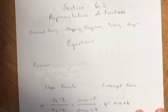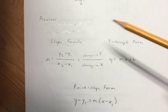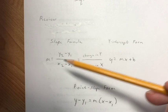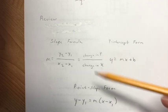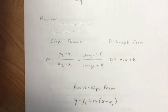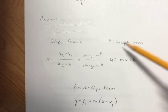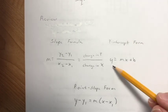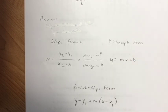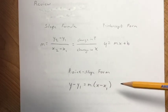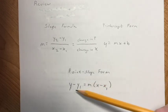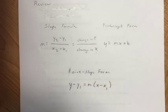So just to kind of review, we are still going to be working with the slope formula: m equals y₂ minus y₁ over x₂ minus x₁. Remember that slope m is the change in y over the change in x. Another thing we need to remember is the slope-intercept form: y equals mx plus b. And there is also the point-slope form: y minus y₁ equals m times x minus x₁.